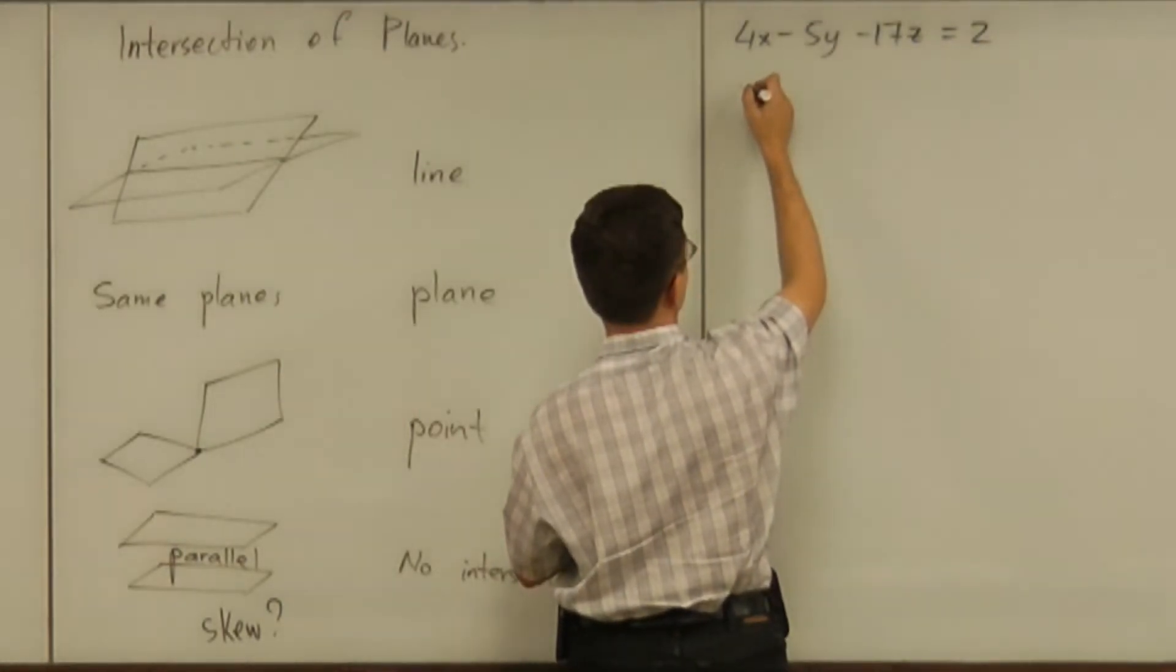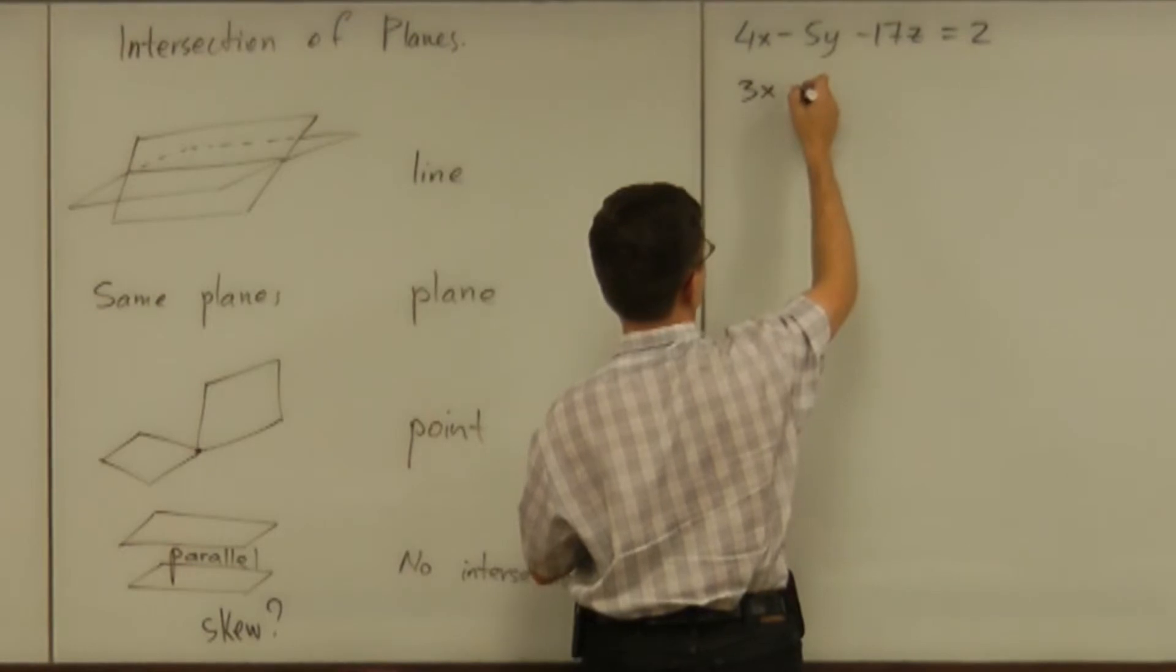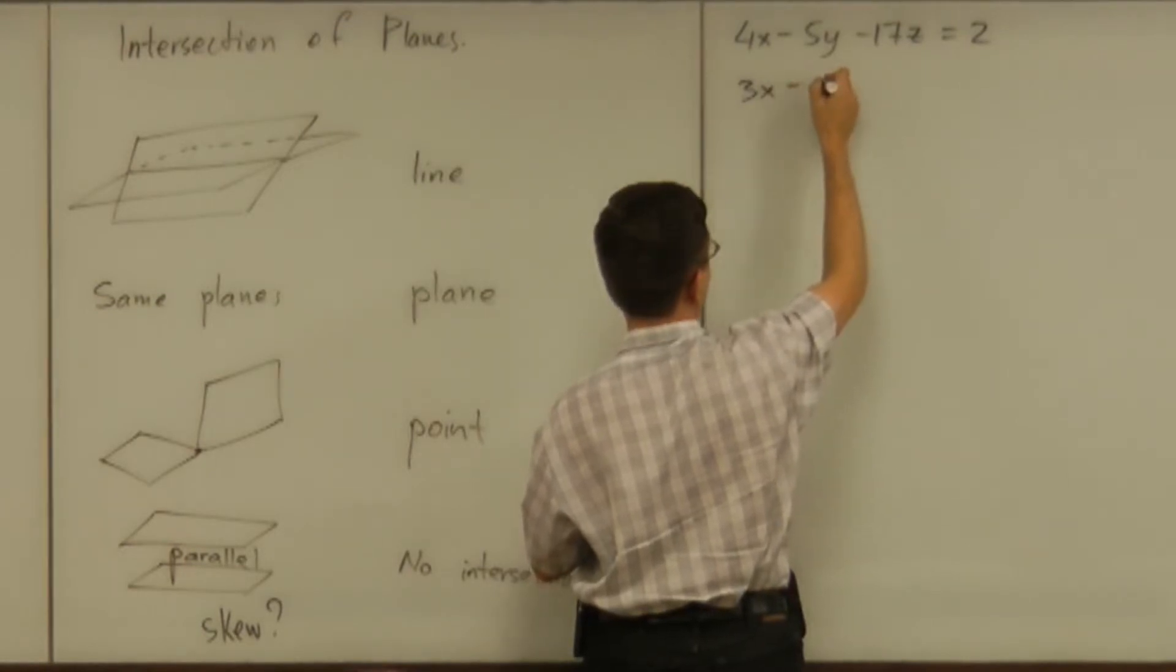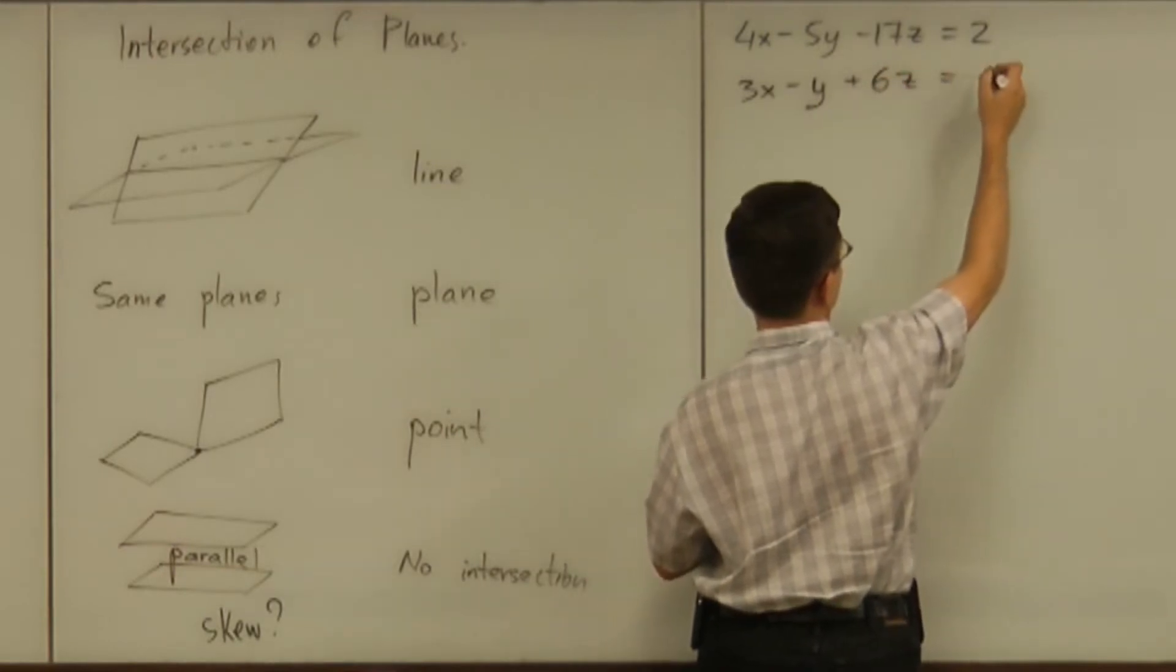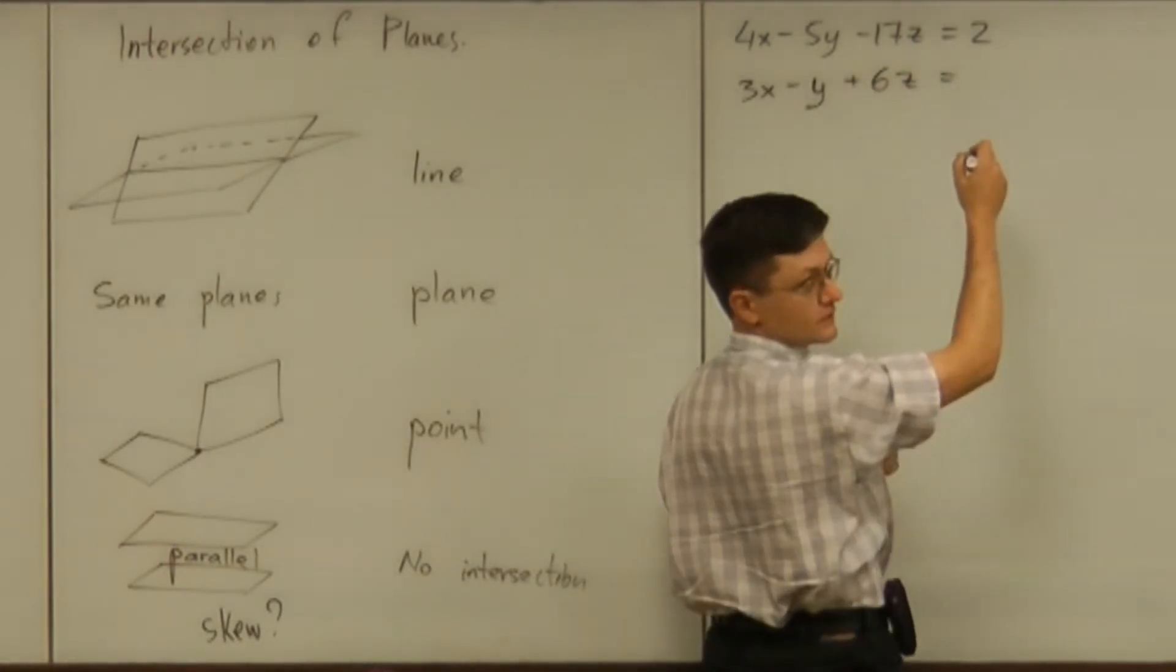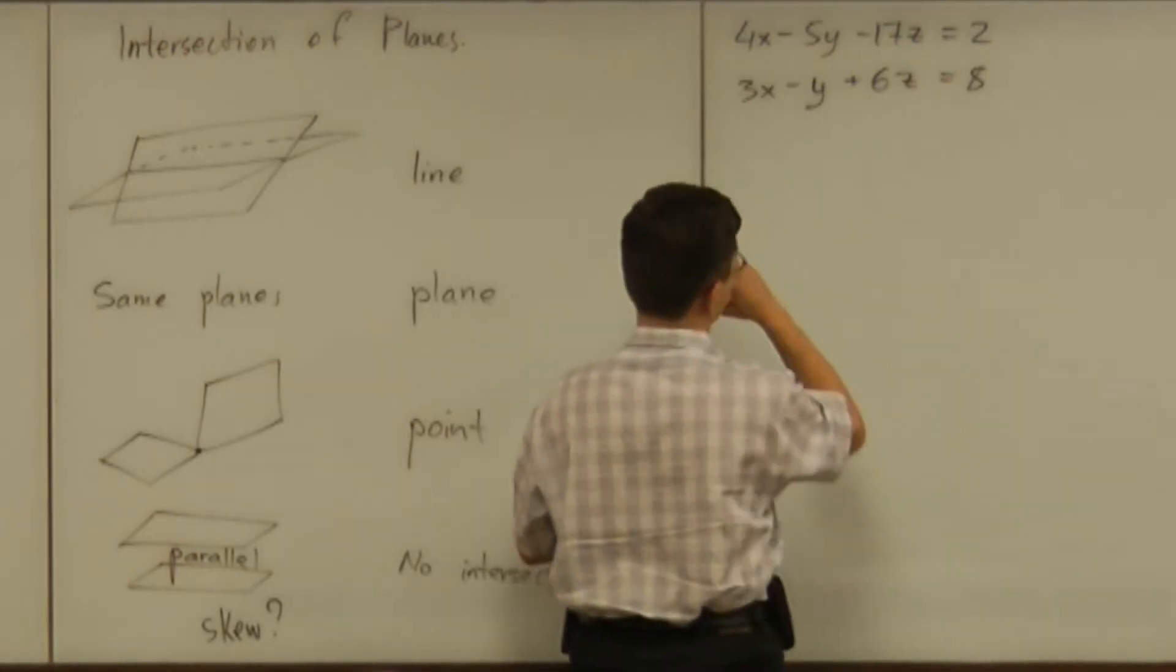And the second plane is? Three. Three x. Six. Negative one y plus six z equals? Eight. Eight. Okay. Two planes.